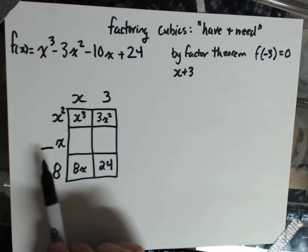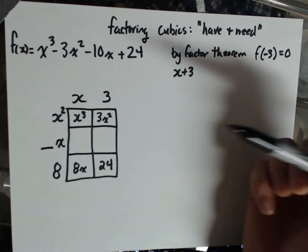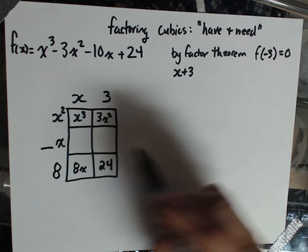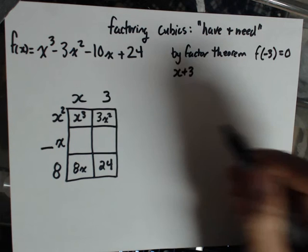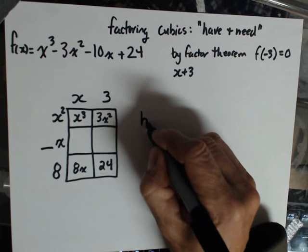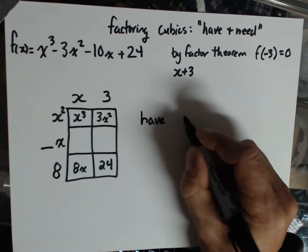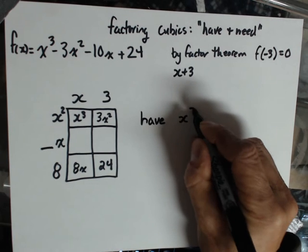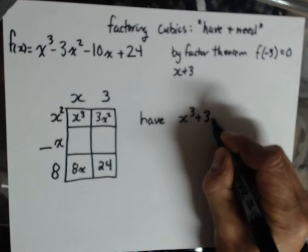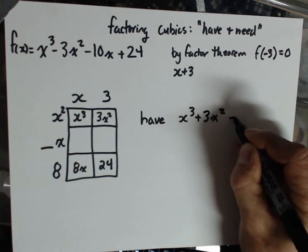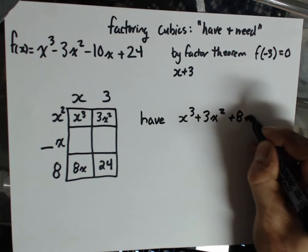What I need to do is figure out what this is. What I actually have based on the factors I've got so far is an x cubed, a 3x squared, an 8x, and a 24.